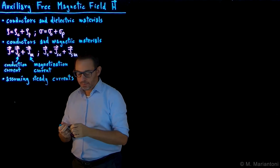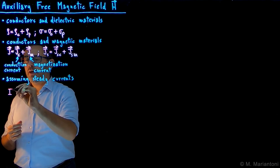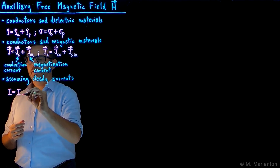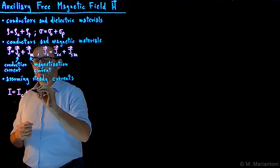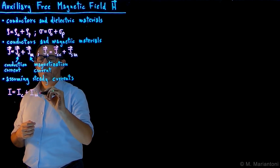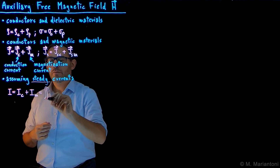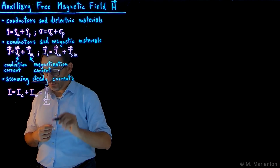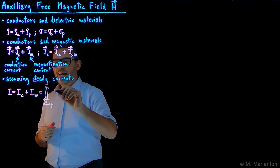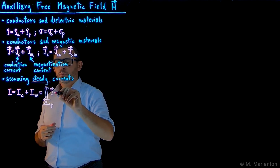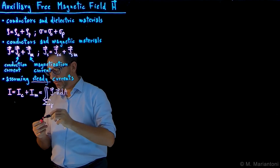Then it so happens that the total current intensity I — these are densities, vectors; the intensity is a scalar — is given by Ic, the conduction current intensity, plus Im, the magnetization current intensity. And this, under steady conditions, can be written as the flux through a surface Σγ — which is an open surface with border γ — of J total · dA. This is only true because we're assuming steady currents, as we've done in PHYS 242.